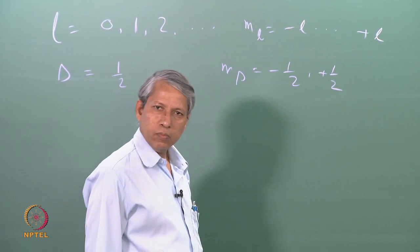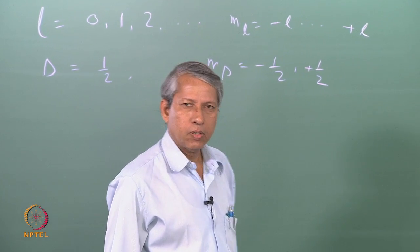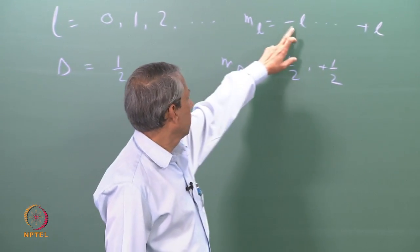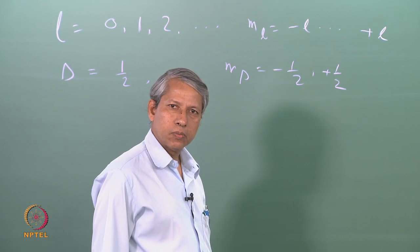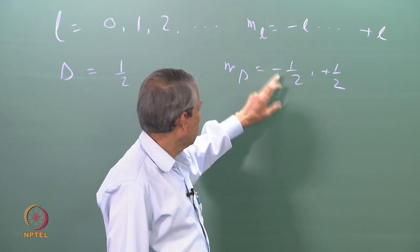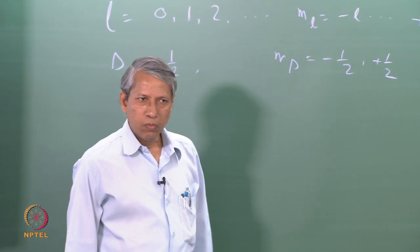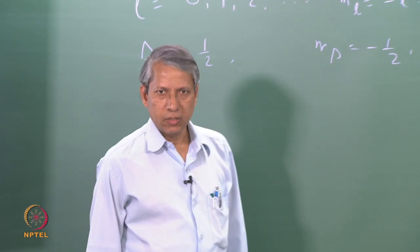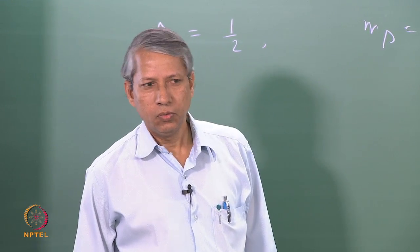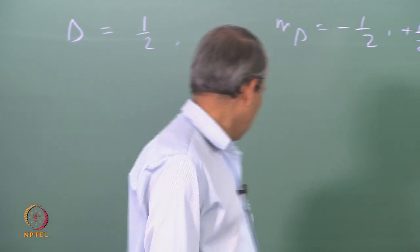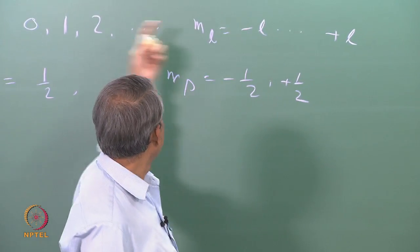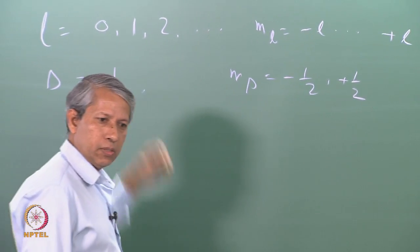Orbital angular momentum is also a vector quantity and can take various components depending upon its value. These two angular momenta, being vectors, can now be added together to generate a net angular momentum, which can take integral or half-integral values depending on the combination.